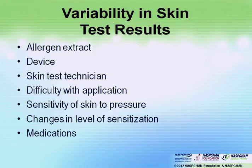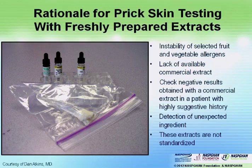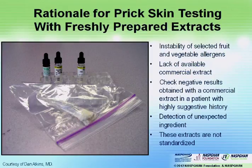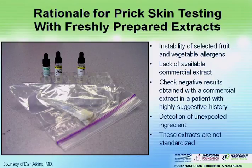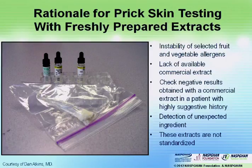Beyond standard commercial extracts, there's the ability to use fresh foods for skin testing. If someone reacts to a food but routine testing is negative, families can bring in the actual food — made into a slurry and placed on the skin — to test. This was done in the wheat case, identifying a mite allergy. This approach has helped identify food allergens that traditional testing missed, and this methodology is currently being written up to assess its utility over time.